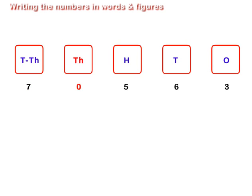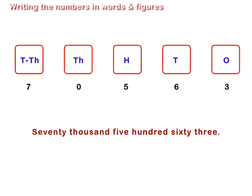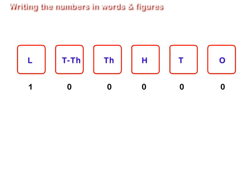The next number has 7 at ten thousands, 0 thousands, 5 hundreds, 6 tens, and 3 ones. In figures, it is written as 70563, and in words as seventy thousand five hundred sixty-three.